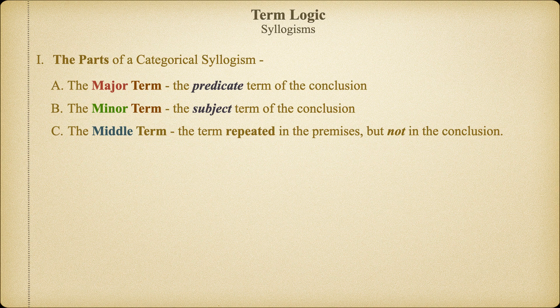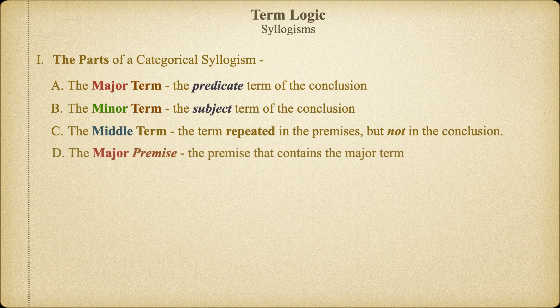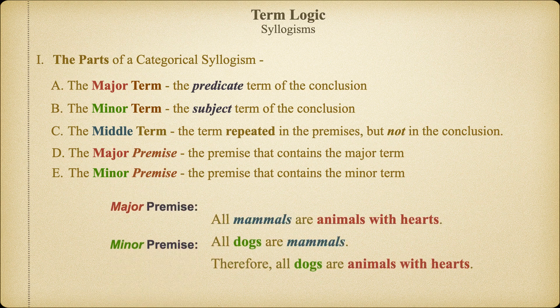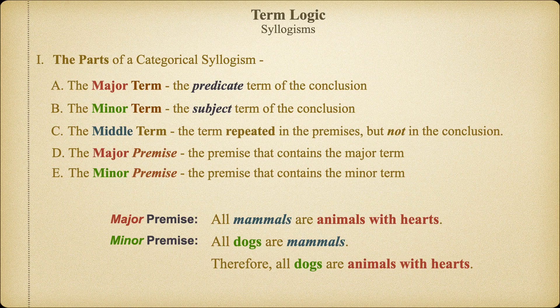Now that we've defined our three terms and noted that the major term is always found in the first premise and the minor term is always found in the second premise, we can define those two premises. The major premise of a categorical syllogism is the premise which contains the predicate of the conclusion, while the minor premise is the one that contains the subject of the conclusion. Remember that in formal logic, order is everything, so getting this vocabulary down is going to be absolutely essential to everything that we are going to do next.